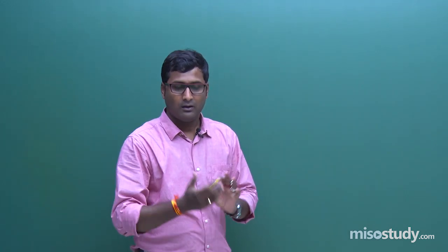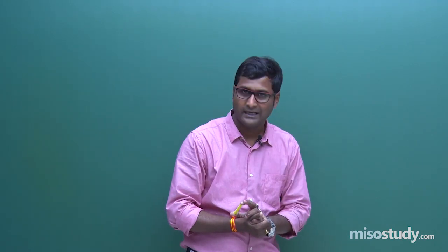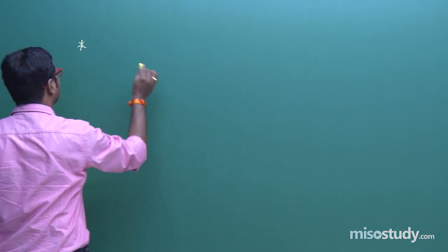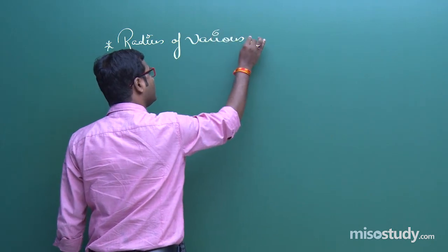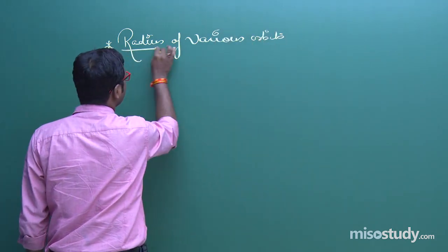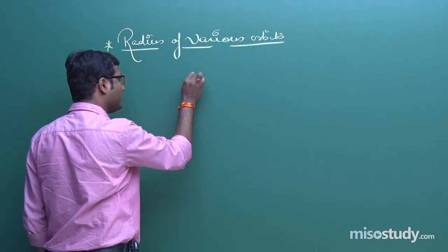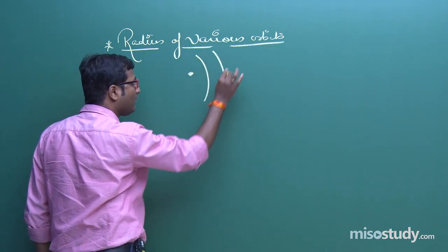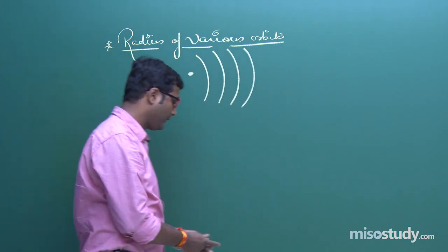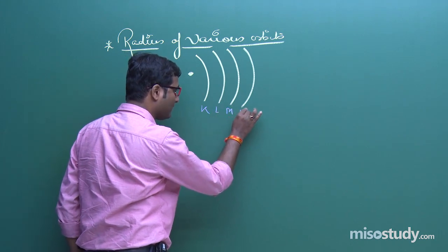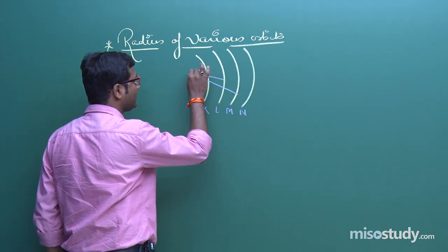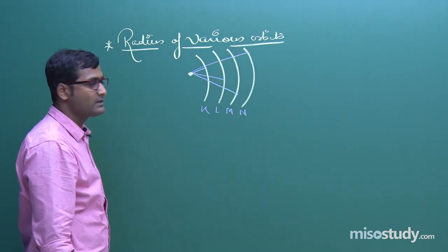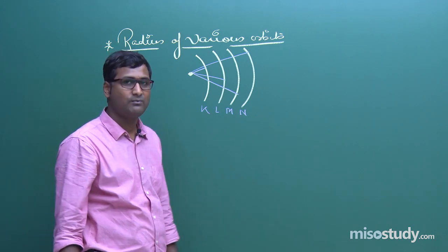We start with the first topic: how to find the radius of various orbits. As we know, if this is a nucleus and an electron revolves around the nucleus in a fixed orbit, we know this one is K, this one is L, this one is M, and this one is N. For the first orbit, this is the radius; for the second orbit, this is the radius — and so on. So we have to find R1, R2, R3, R4, R5, and so on.